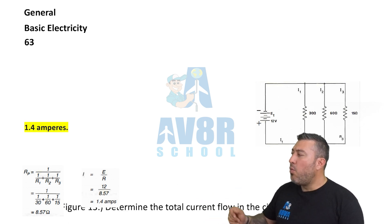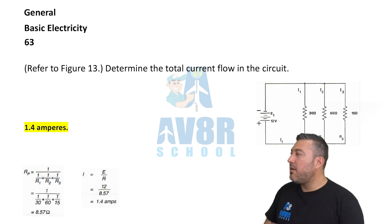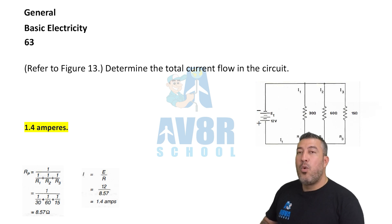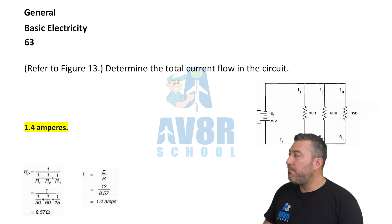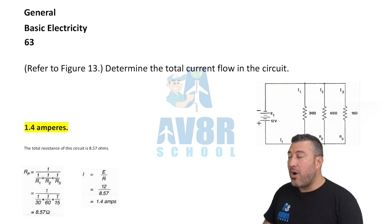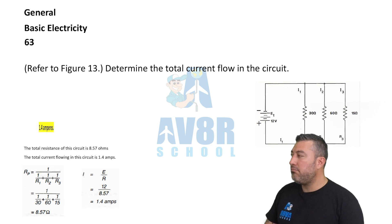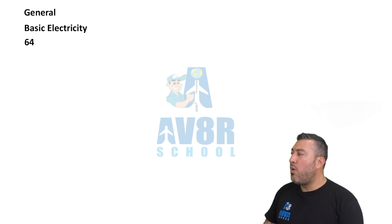63: Refer to figure 13 — determine the total current flow in the circuit. The total current flow in this circuit is 1.4 amps.